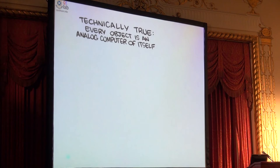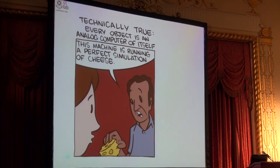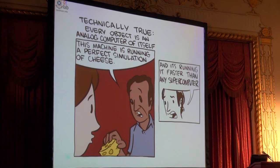The boson sampling one, one of the criticisms I normally get of it is this. It's technically true that every object is an analog computer of itself. This machine is running a perfect simulation of itself, and it's running faster than any super computer. So one of the criticisms of boson sampling is what is it good for? And the answer is nothing. It's not good for quantum chemistry. No, it's good for proving computer scientists wrong, and that's new science, and that's interesting. But it's not good for quantum chemistry, which is one of the really interesting spaces we want to move into.